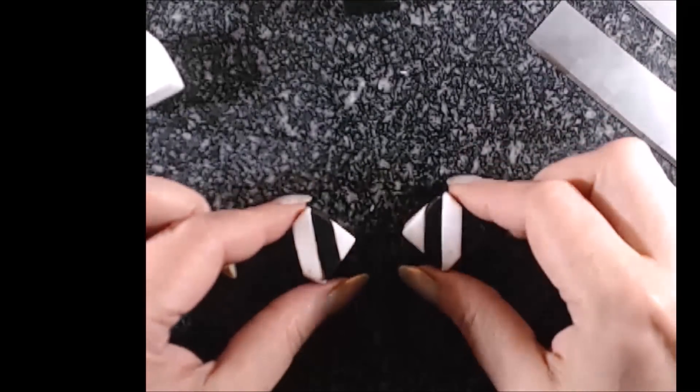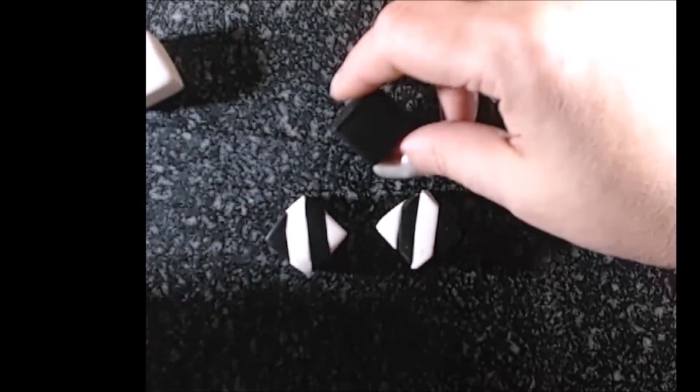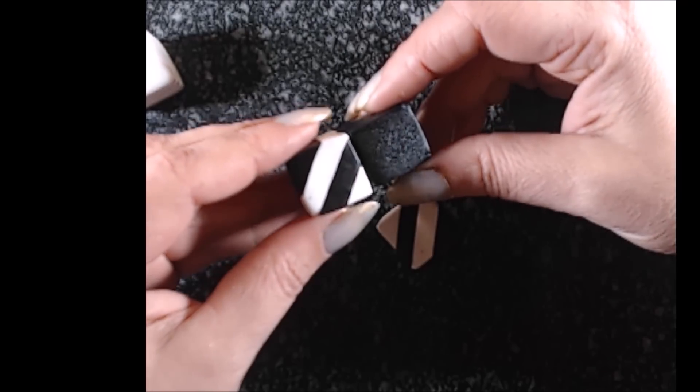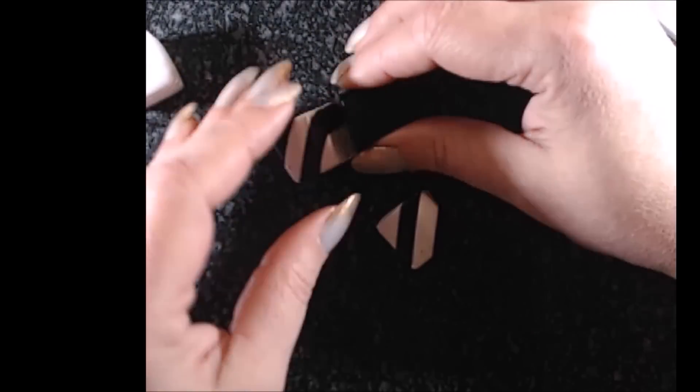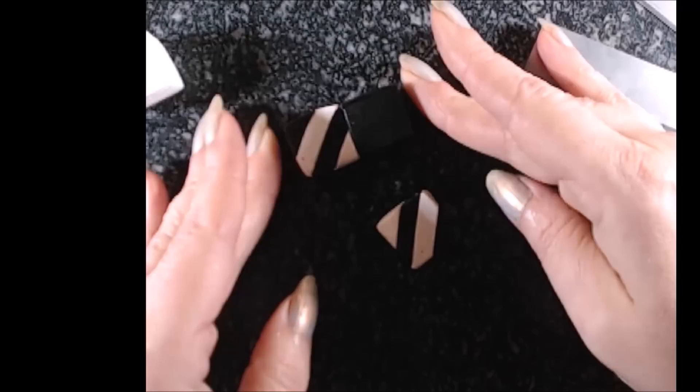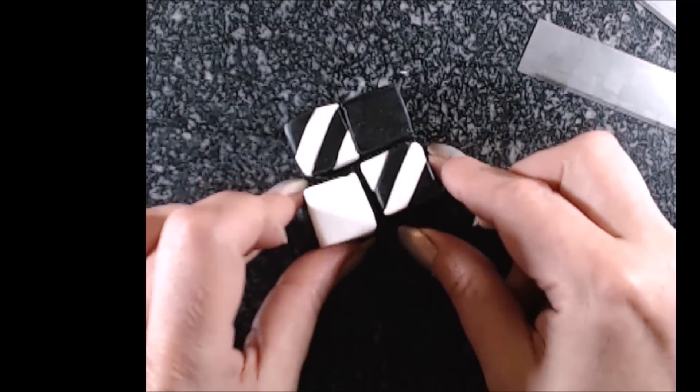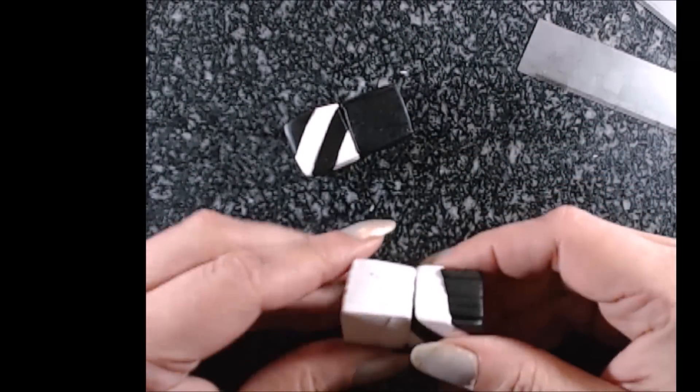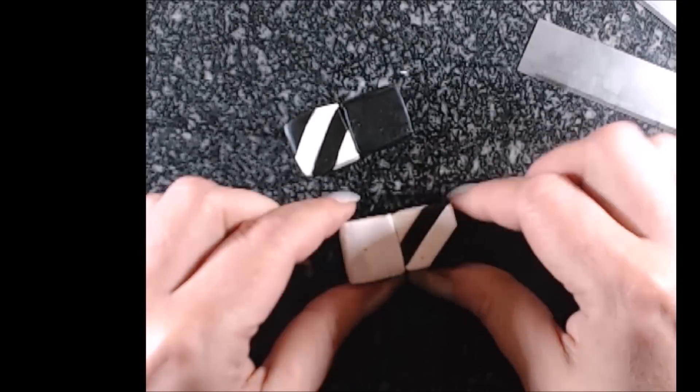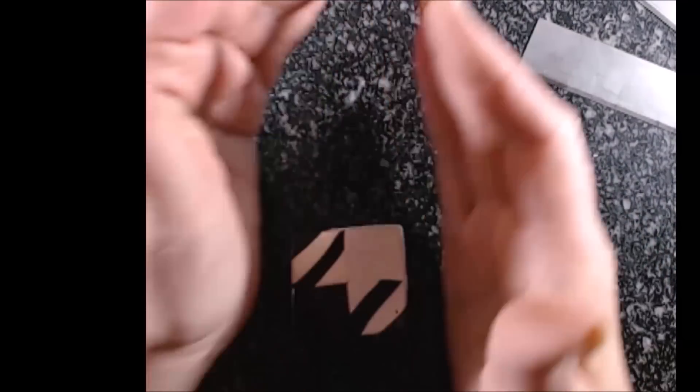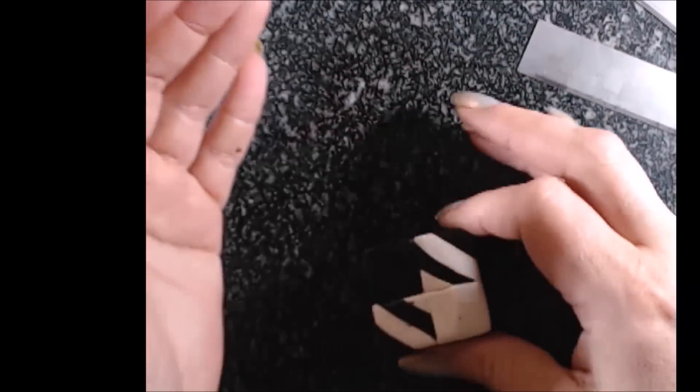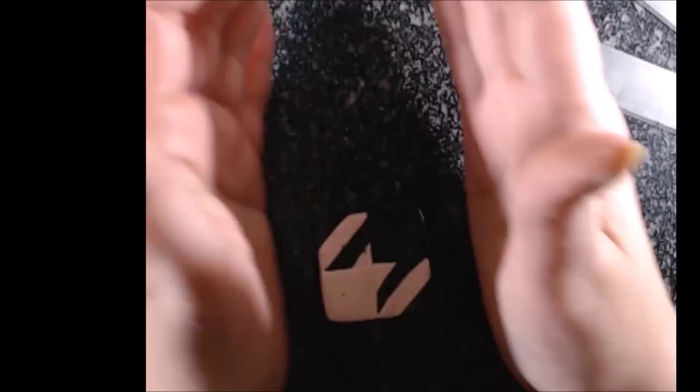To create the houndstooth pattern, just place your diagonals like this. Whenever I have to unite four, I prefer to do them two at a time and then put together the white and the other diagonally cut cane. They will form the houndstooth and all that is left now is to reduce.